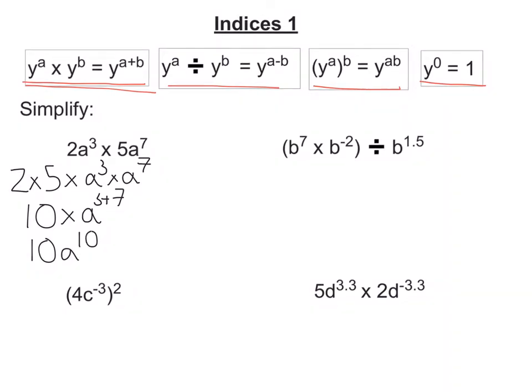Let's look at the second one. So let's deal with what's in the bracket first. So multiplying letter terms together, we're going to add the powers. So that's going to be 7 plus negative 2 is 5.